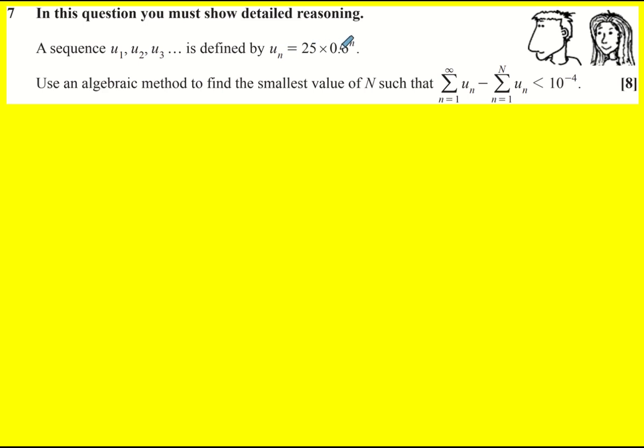Sequence defined by un equals 25 times 0.6 to the n. Now when I did this I immediately recognized it was a geometric sequence and the general form is a r to the n minus one, which we don't quite have here.